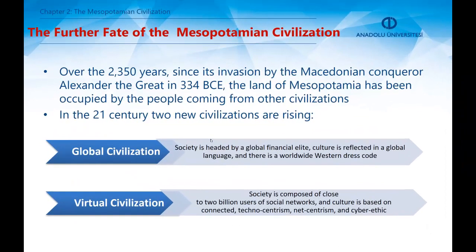Over the 2,350 years since its invasion by the Macedonian conqueror Alexander the Great, the land of Mesopotamia has been occupied by people from many other civilizations. To understand this civilization and its fate for coming generations, we need to consider two new types of civilization rising in the 21st century: global civilization and virtual civilization. In global civilization, society is headed by a global financial elite and culture is reflected in a global language and a worldwide Western dress code. In virtual civilization, society is composed of close to 2 billion users of social networks, and culture is based on connected technocentricism, natocentricism, and cyber ethics.